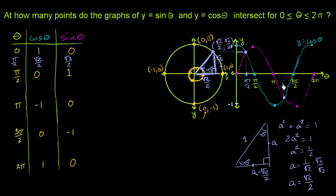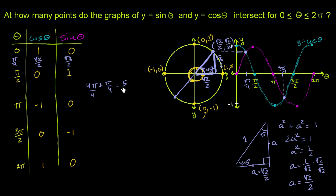The second intersection point is right between pi and 3 pi over 2. That angle is pi plus pi/4, which equals 4pi/4 + pi/4 = 5pi/4. So we need to find the values of cosine and sine at theta equals 5 pi over 4.